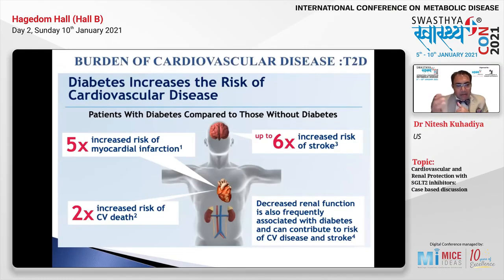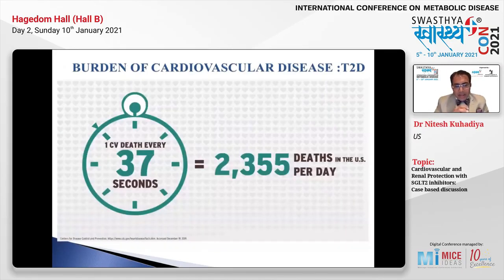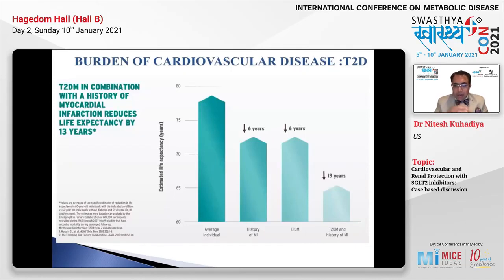When you think about patients with diabetes, they are five times at higher risk of myocardial infarction, up to six times increased risk of stroke, and twice as high risk of cardiovascular death. These patients frequently have impaired renal function, which further enhances their risk of CV disease and stroke. In the United States, CDC data shows one cardiovascular death every 37 seconds. A history of type 2 diabetes or MI reduces life expectancy by six years; having both reduces it by 13 years.